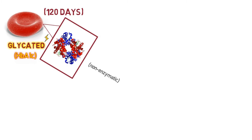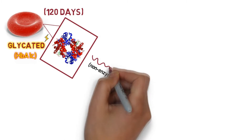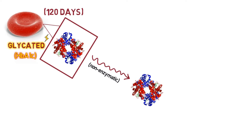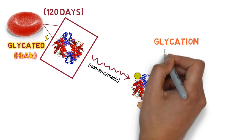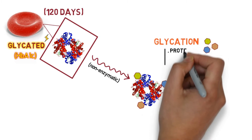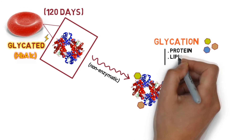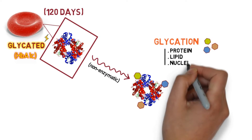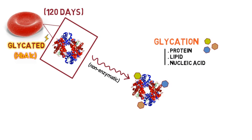Glycated hemoglobin HbA1c is a form of hemoglobin that is non-enzymatically linked to monosaccharide molecules such as glucose, galactose, and fructose. The term glycation refers to the normal process involving the reversible attachment of glucose to proteins, lipids, and nucleic acids without the action of any enzymes.